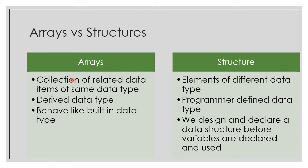What is the difference between arrays and structures? An array is a collection of related data items of the same data type, while in a structure the data types are different. Arrays are a derived data type and behave like a built-in data type. But structures are programmer-defined data types — we must define them before declaring variables.